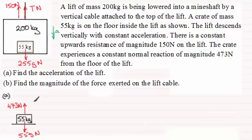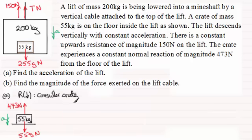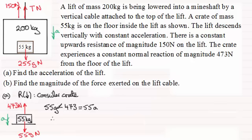The acceleration is downwards, marked as A. Resolving downwards and applying Newton's second law, F = ma, we get: 55g − 473 = 55A. Taking g = 9.8, we get 55 × 9.8 − 473 = 66 = 55A. Dividing both sides by 55 gives the acceleration A = 1.2 metres per second squared.